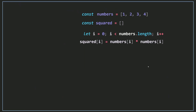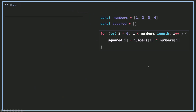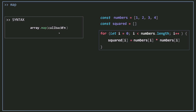Now, to achieve the same thing using the map method, you want to call map on your array — in this case, numbers. All you need to pass in is a function that will calculate the squared number of each of these numbers. Because this function is passed to another function, it is called a callback function.